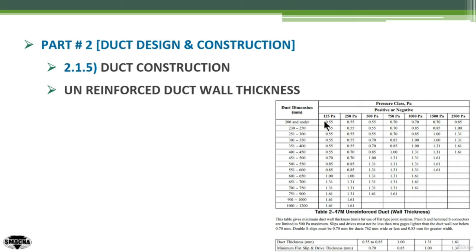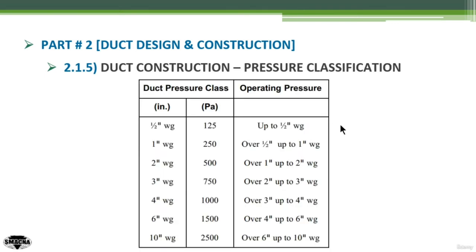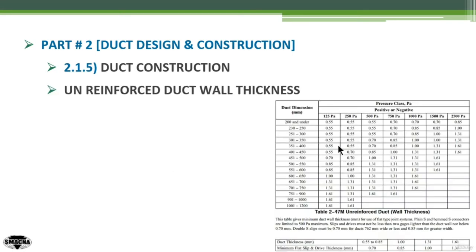The duct pressure classification depends on the external static pressure (ESP) of the fan. For example, a fan with 1.5 inches ESP gives a duct pressure classification of 2-inch water gauge, because 1.5 falls between 1 and 2 operating pressure. This is the second input.